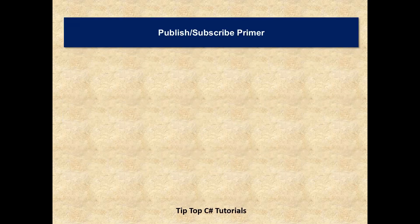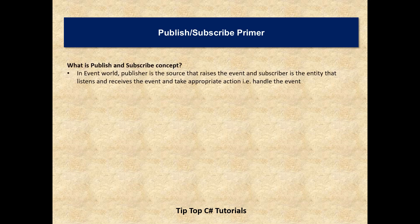First up, publish and subscribe primer. If you haven't watched our videos on events and delegates series, please do watch it so that you can get a better understanding of events, delegates, and all these concepts. In the event jargon, a publisher is the source which will raise the event, and a subscriber is the entity that receives the event and responds to it — meaning that a publisher will raise the event and the subscriber will have the handler for the event.